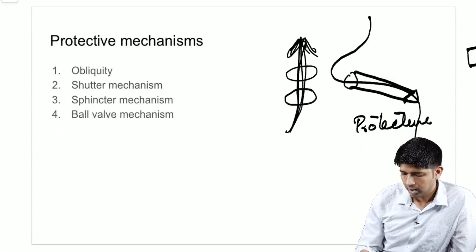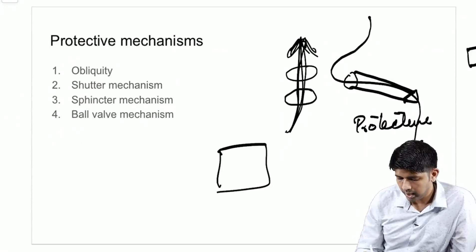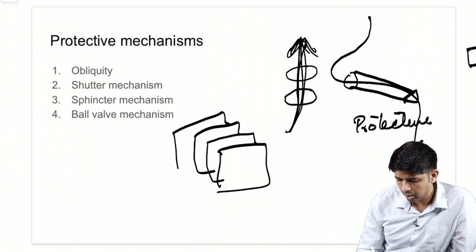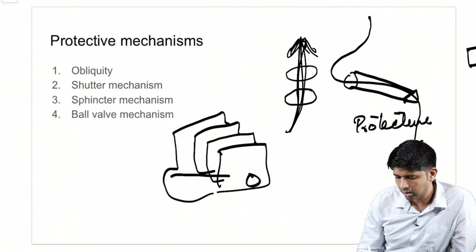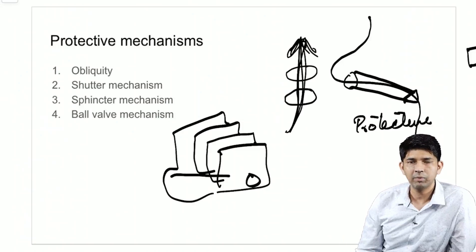Next is your shutter mechanism. Now, we just read that you are going to have the conjoined tendon, the external oblique aponeurosis and this is how the anatomy of the inguinal canal is.